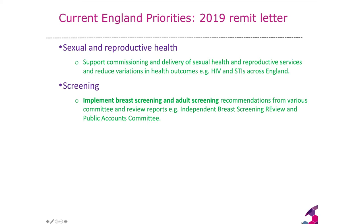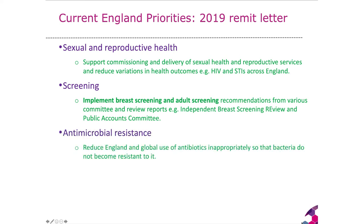Some parts of the country have worse sexual health rates, and the question is why and what more can be done in those areas. Then we move on to screening — particularly implementing the breast screening programme and adult screening programmes such as NHS health checks — based on independent reviews by, for example, the independent breast screening review committee and the Public Accounts Committee, which is a select committee of Parliament that works on issues around public accounts and has a very broad remit. Antimicrobial resistance has also been a long-standing area of work for the last 10 to 20 years.